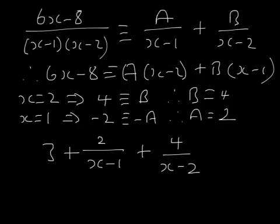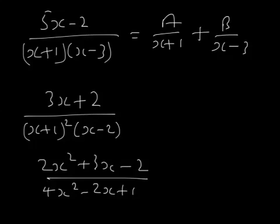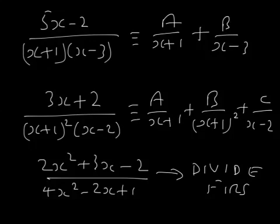There are three types of partial fractions. Type 1: distinct linear factors — write as A over (x plus 1) plus B over (x minus 3). Type 2: a repeated linear factor — write as A over (x plus 1) plus B over (x plus 1) squared plus C over (x minus 2). Type 3: the numerator degree is equal to or greater than the denominator degree — divide first, get a remainder, then split that remainder into partial fractions. That's partial fractions — a nice, straightforward topic.